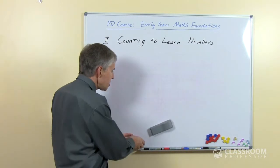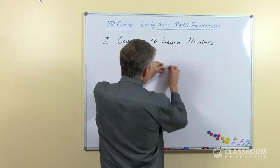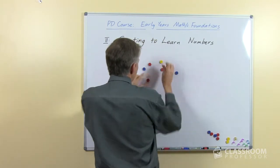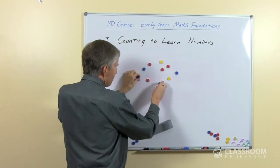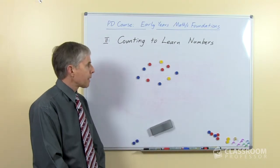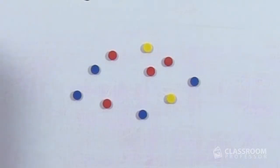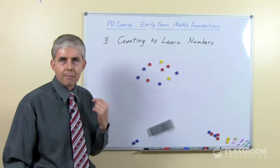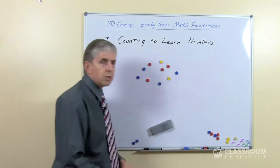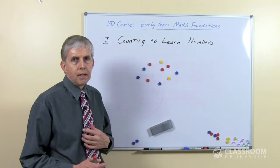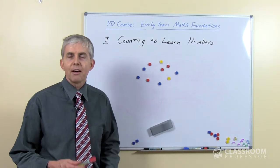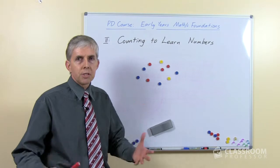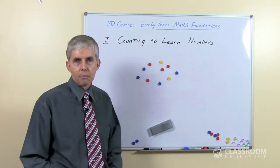Let's look at the process of counting and think about what it actually means. I'll put some objects up here — how many objects are there? Just have a look, go through the process, work out how many there are. That's not a difficult task, but there are a number of steps involved in it.